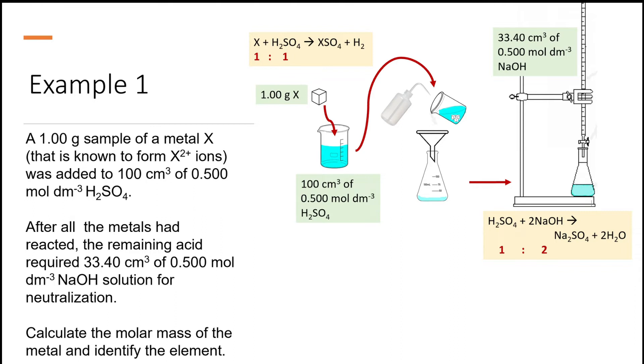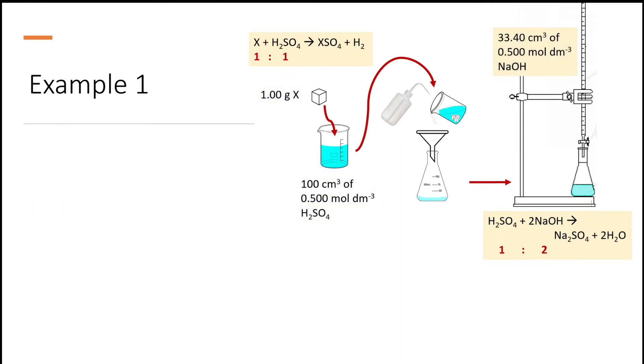To find the molar mass of the metal we need to work backwards starting from the mole of sodium hydroxide needed in the titration. This is why it's called back titration. Here's our model. We can find the initial number of mole of acid using the given concentration and volume.